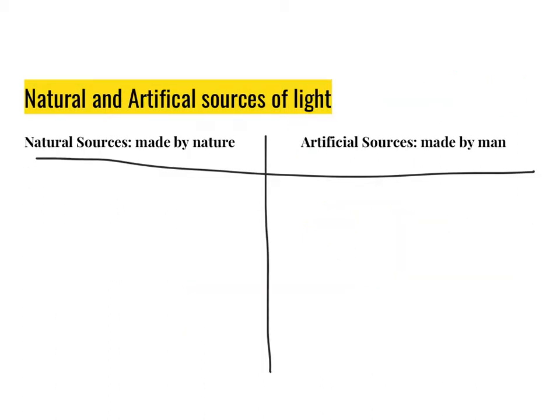So looking at light sources, which is an object or an organism that produces light, we can divide it into two categories. Natural sources, which are made by nature, have existed for a very long time, as well as artificial sources, which are made by man. In this, what we're going to do is we're going to list a couple of examples. So let's start with some natural examples.